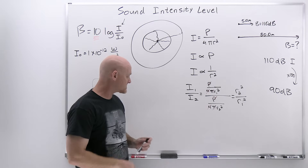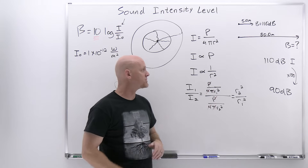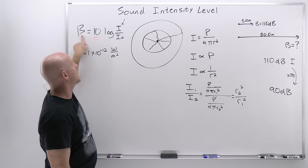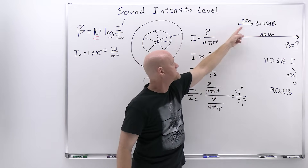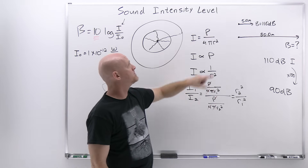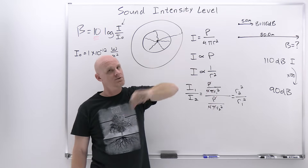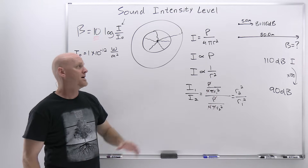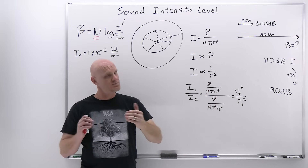If you didn't reason it out that way, you could solve it with algebra. You'd take 110 decibels, plug it into the decibel equation to solve for intensity, then use that intensity and the 5-meter distance to solve for the power. Then use that power — which is constant for the source — with a distance of 50.0 meters to get the new intensity. Finally, plug that new intensity back into the decibel equation to get the new intensity level. It's a fair amount of algebra, but if you understand the relationships, you can reason it out as we did.